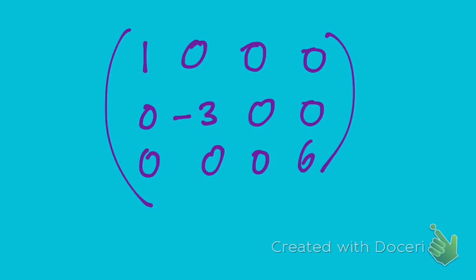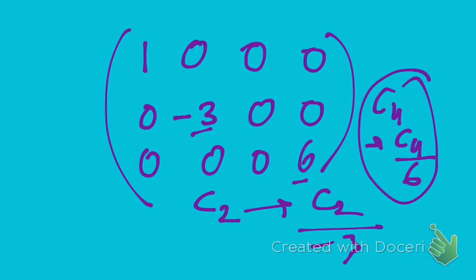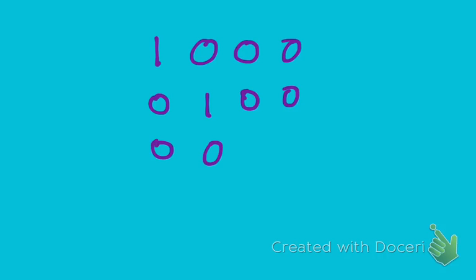Now there is just one single non-zero number in each row. I divide C2 by minus 3 to get a 1, and divide C4 by 6 to get a 1. Rewriting, the matrix becomes: 1, 0, 0, 0 / 0, 1, 0, 0 / 0, 0, 1, 0 — wait, let me write it correctly: 1, 0, 0, 0 / 0, 0, 0, 1 / 0, 1, 0, 0.